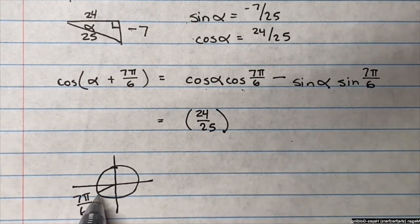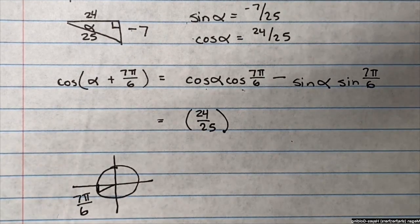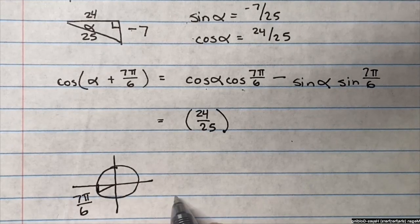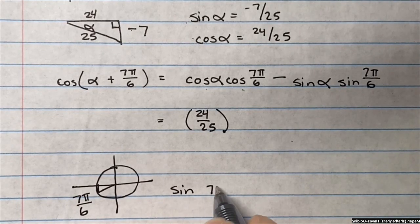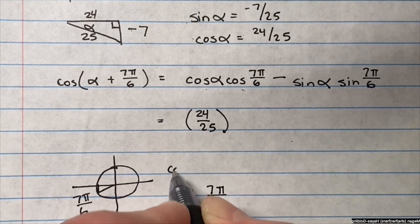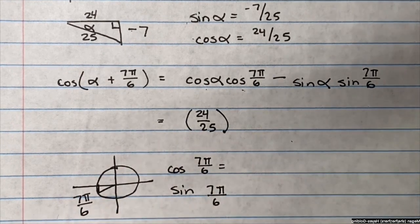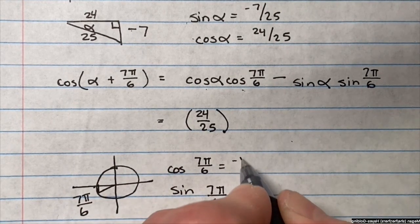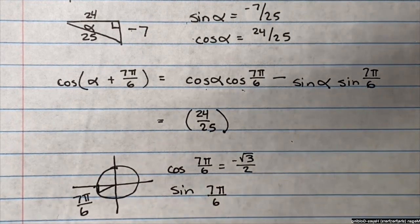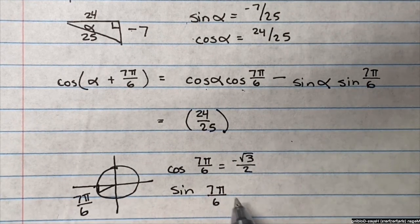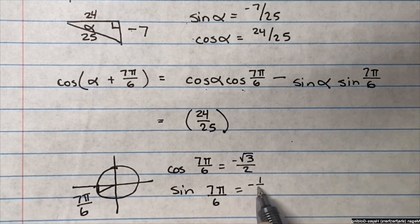And there's my reference triangle, reference angle. So the cosine, that'll be negative, negative root 3 over 2, and the sine is negative 1 half.